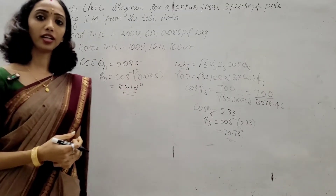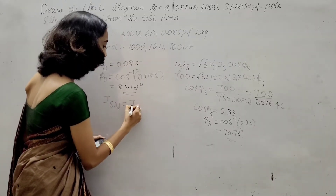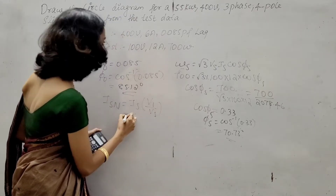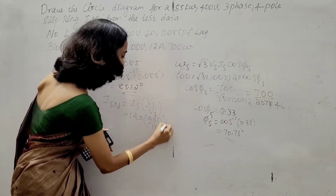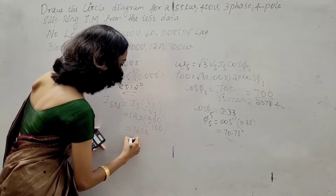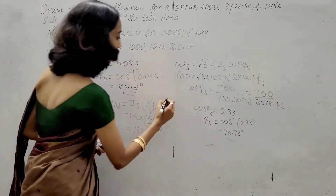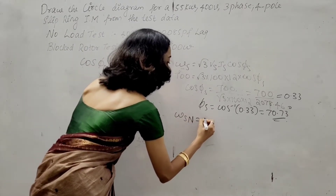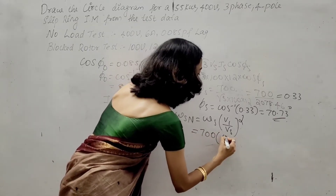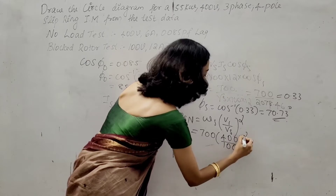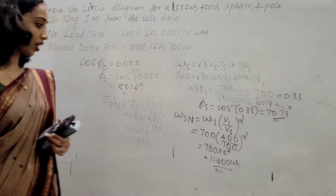We calculate the short circuit current ISN and short circuit power WSN. ISN = IS × (V1 / VS) = 12 × (400 / 100) = 48 ampere. WSN = WS × (V1 / VS)² = 700 × (400 / 100)² = 700 × 16 = 11,200 watt.